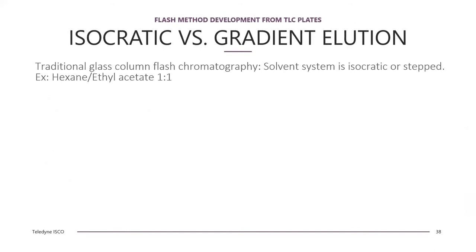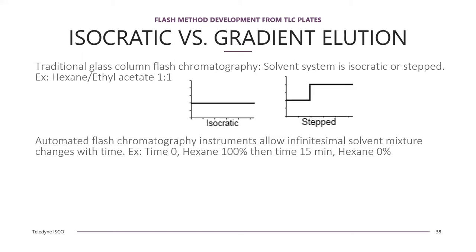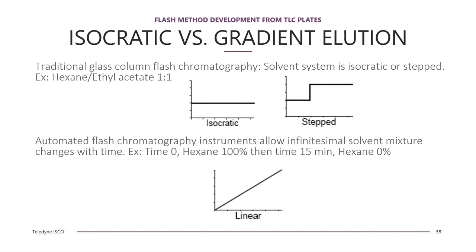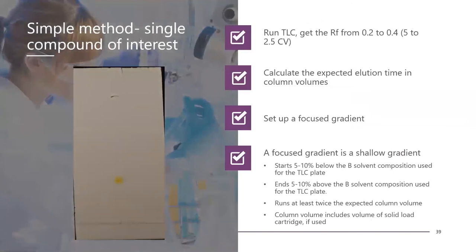We will now discuss method development. Traditional glass columns are run isocratically or with step gradients. However, with modern systems you can run a linear gradient. Isocratic methods are very easily determined from TLC, and linear gradients are commonly used for scouting on HPLC systems. A very simple method: run a TLC and get a retention factor from 0.2 to 0.4 — that is 5 to about 2.5 column volumes — then make an isocratic run with the same solvent composition.